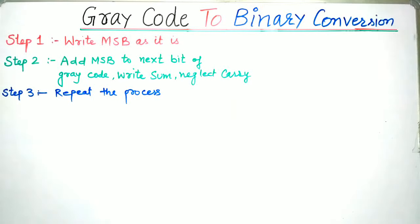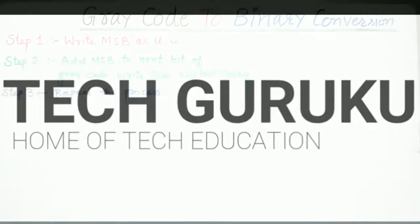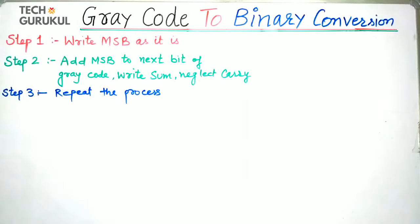In this lecture, we will study gray code to binary conversion. When we are given a gray code and we have to convert it into binary, three steps are involved, as we have seen in the last lecture when we did binary to gray code converter.